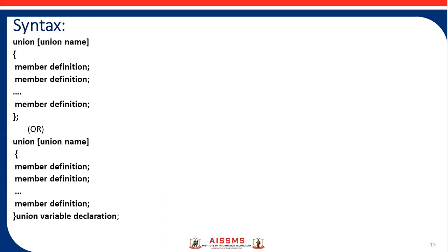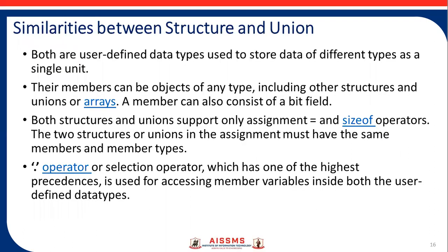The format of the union statement is as follows. The syntax is: union union_name, then member definition — or alternatively, union union_name, then member definition and union variable declaration, then closing curly bracket. Similarities between structure and union: both are user-defined data types used to store data of different types as a single unit. Their members can be objects of any type, including other structures and unions or arrays. A member can also consist of a bit field. Both structure and union support only assignment and sizeof operators.